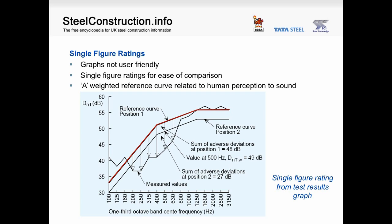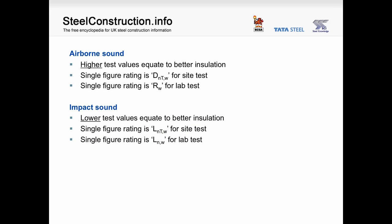To compare sound insulation results, a graph is not the easiest tool, and therefore single-figure ratings are required. An A-weighted reference curve is used to convert graph results into a single-figure rating, which is intended to reflect the perception of the human ear across the frequency range. In most cases, the engineer will not need to carry out this procedure as the test result gives both the graph and the single-figure rating. Importantly, for airborne sound, higher test values equate to better insulation, whereas for impact sound, lower test values equate to better sound insulation.